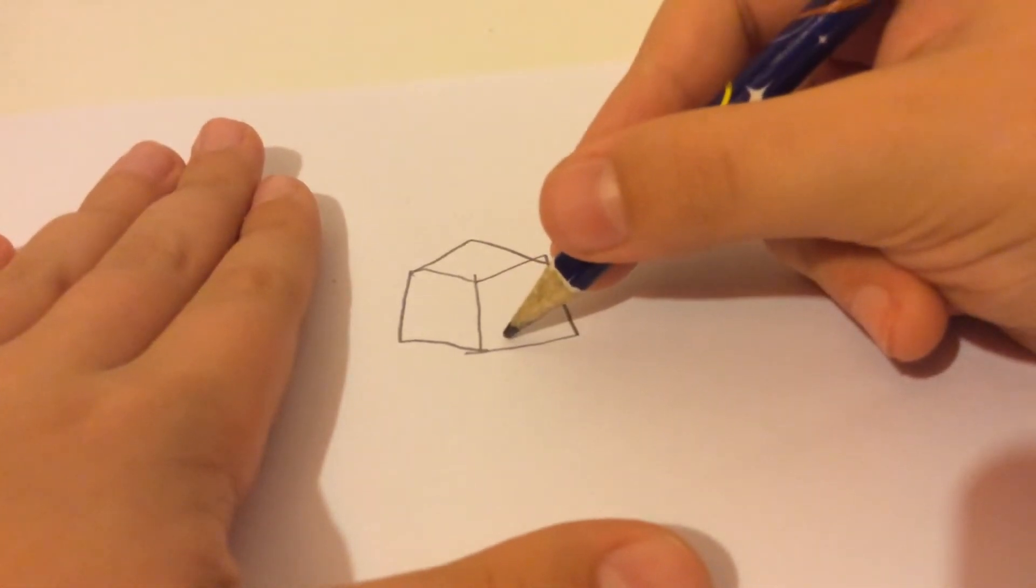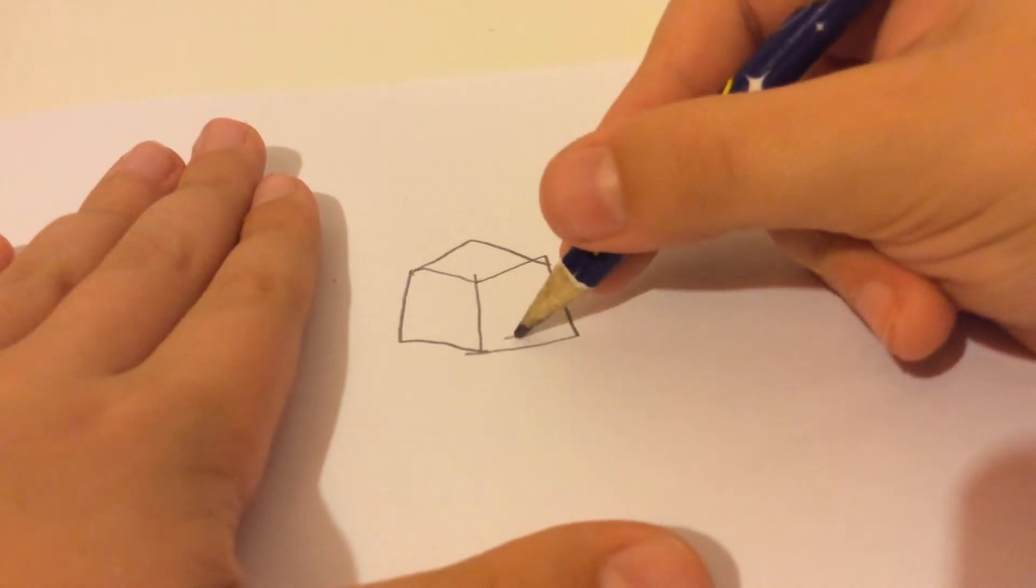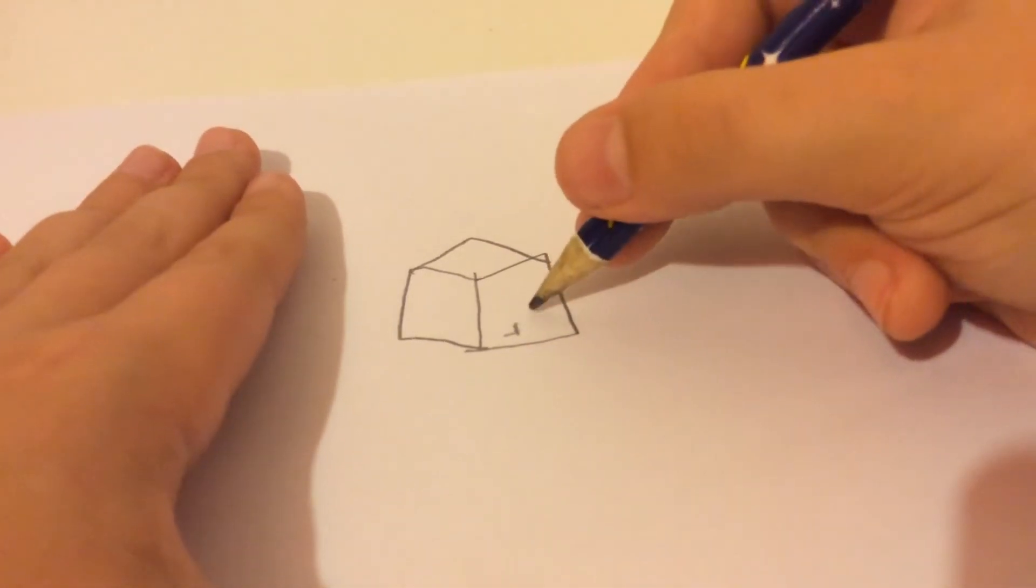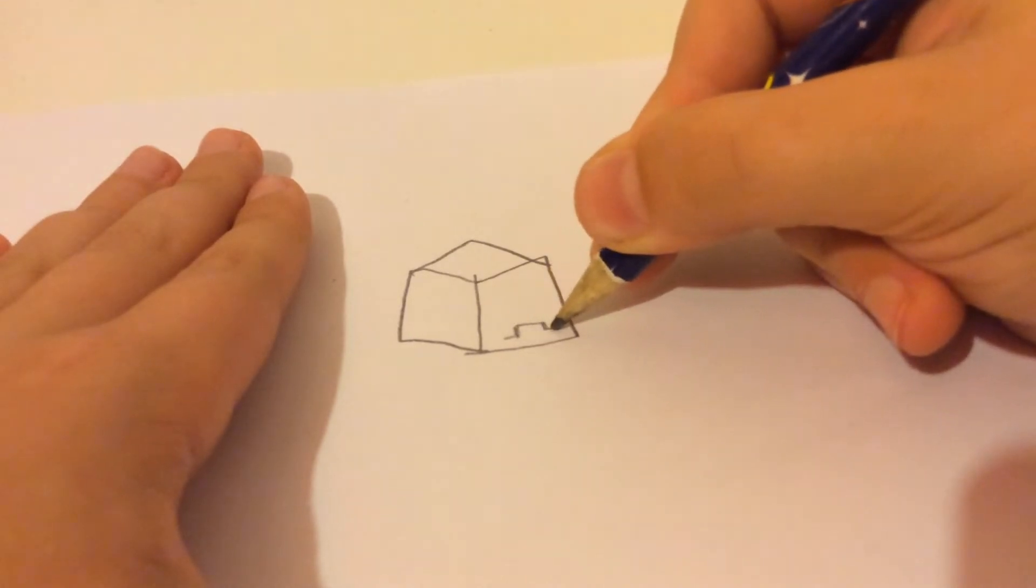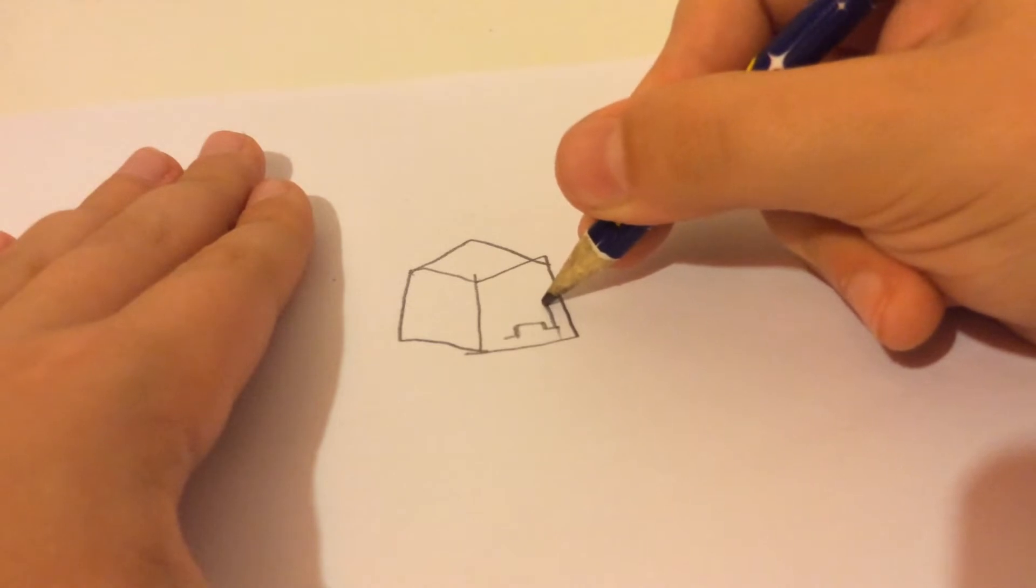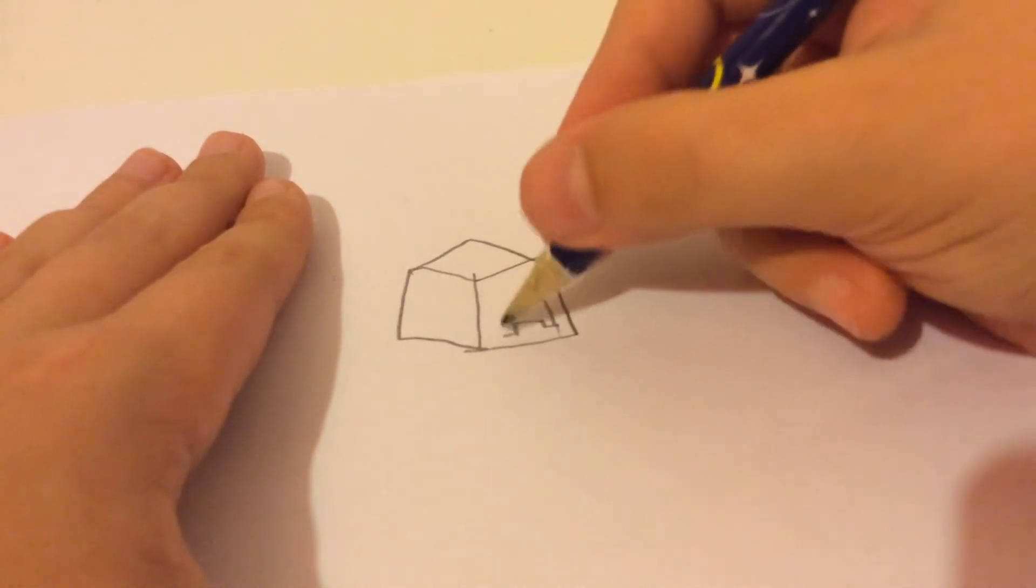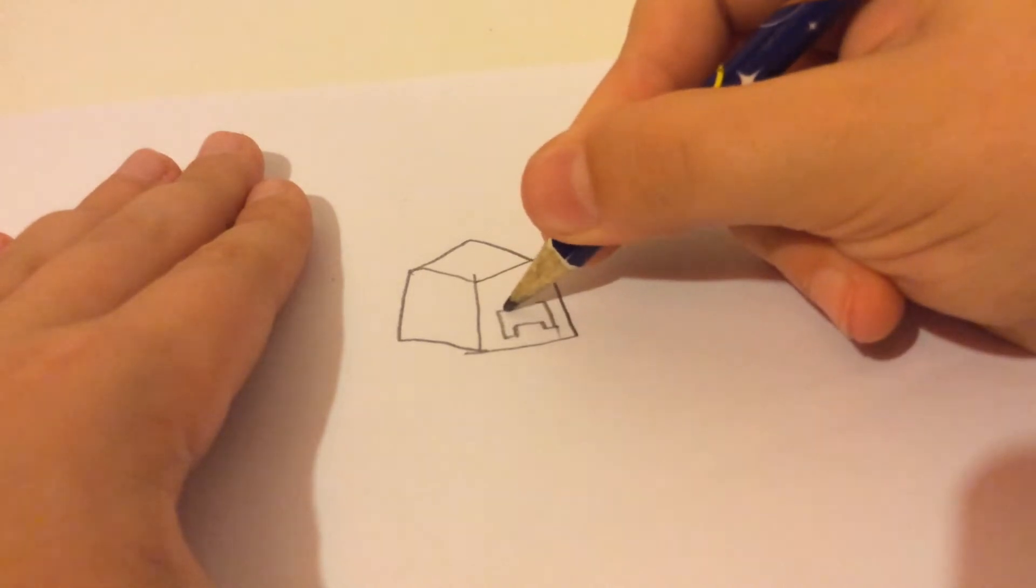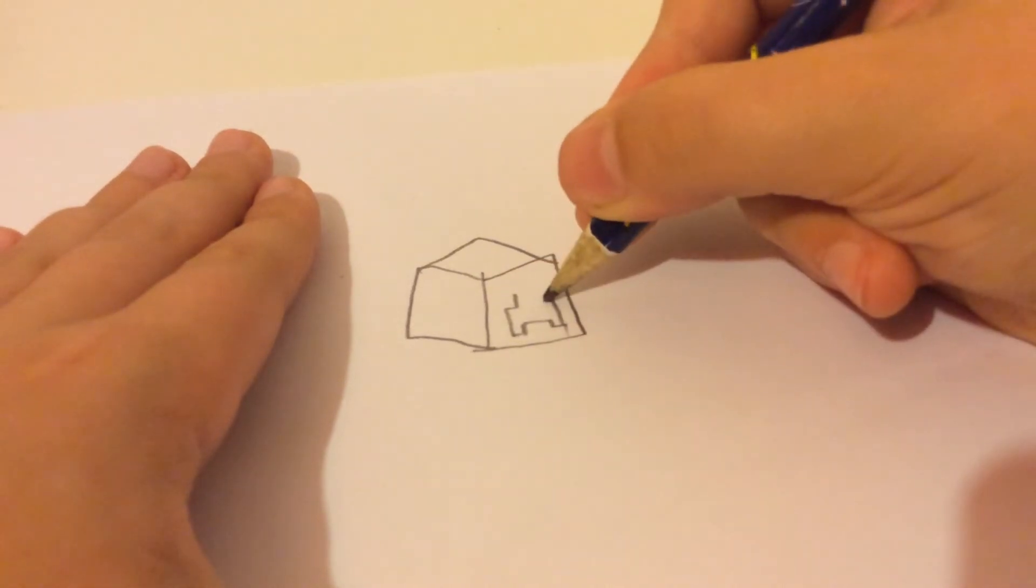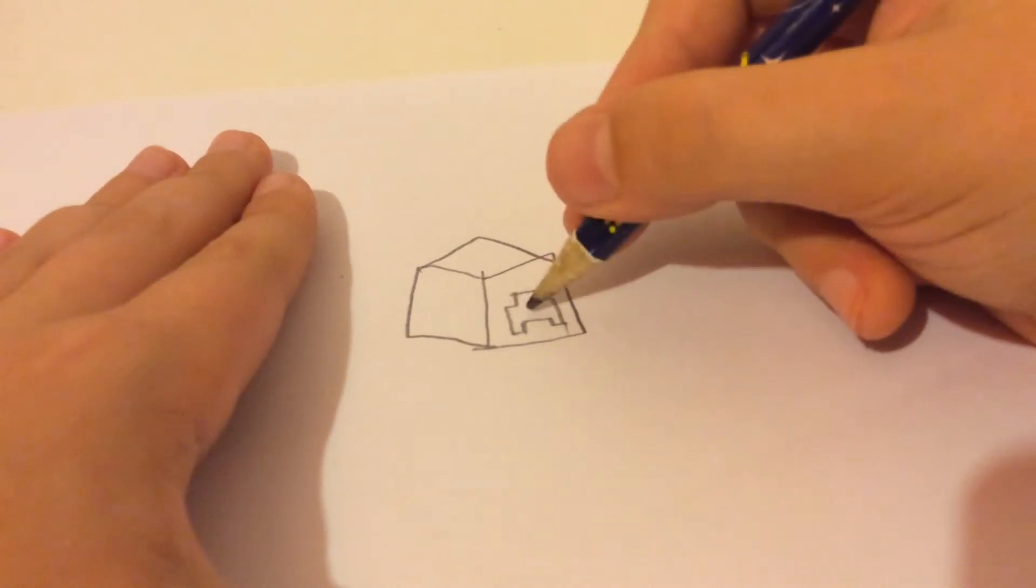So first you want to do like a tiny line like that. Now you put up. Right, and then up like that, and then bring it up. Like up there, and do the same to this. Then more up. And then close it off like that there. That'll be the mouth.